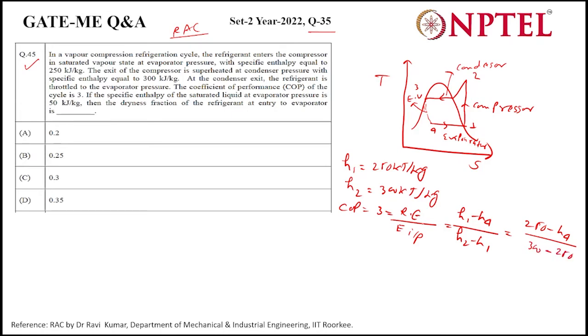h1 is 250. From here we can find h4, which comes to 100 kilojoule per kg, and it is the same as h3 because throttling is happening, so h3 would be same as h4.